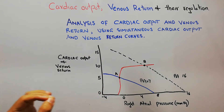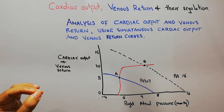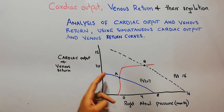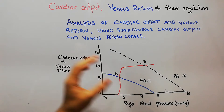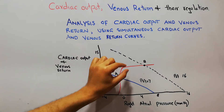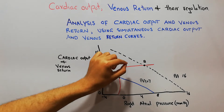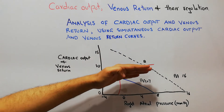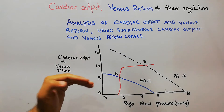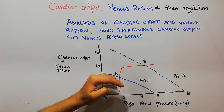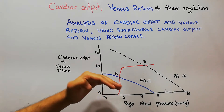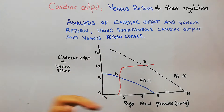So far in our previous lectures we have discussed in detail the cardiac output curve, the venous return curve, and the different factors that influence the cardiac output curve — shifting it upwards and downwards — as well as factors which shift or rotate the venous return curve outward and inward.